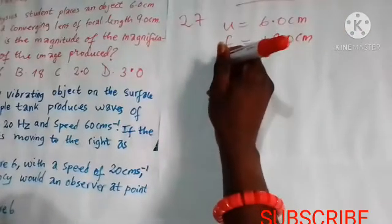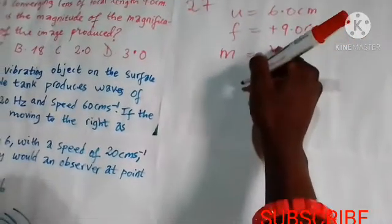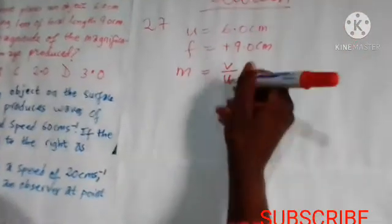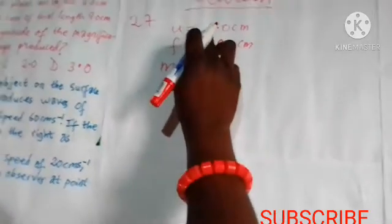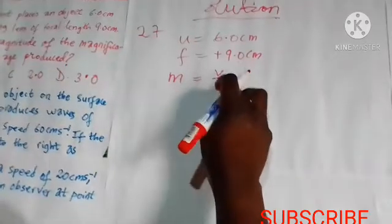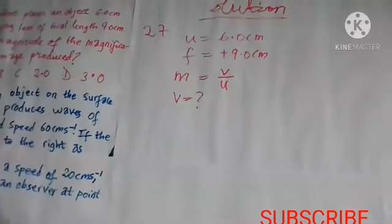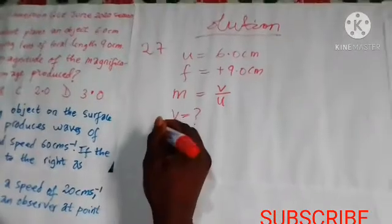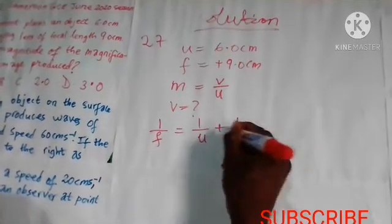What is the magnitude of the magnification of the image produced? First, let's write the formula for magnification. Magnification equals image distance V over object distance U. We can equally say magnification equals image height over object height, but since we have the object distance, we prefer to use the first formula. In this formula we know U, but we do not know V, so we have to calculate V. From the lens equation: 1 over F equals 1 over U plus 1 over V.